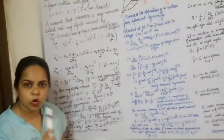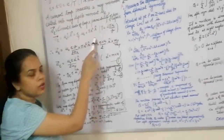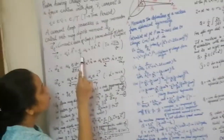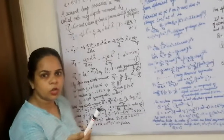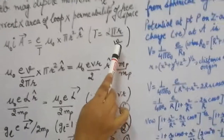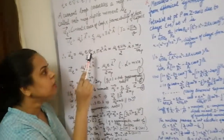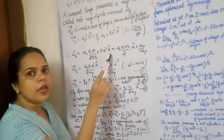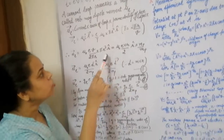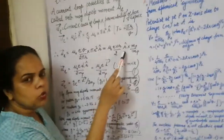Since the proton moves in a circular path, the area is π·r² times the r̂ unit vector. The time period equals circumference over velocity: T = 2πr/v. Substituting T into the equation, we get μ_L = μ₀·e·v/(2πr) · πr² · r̂, and after cancellation we get μ_L = μ₀·e·v·r/2 · r̂.